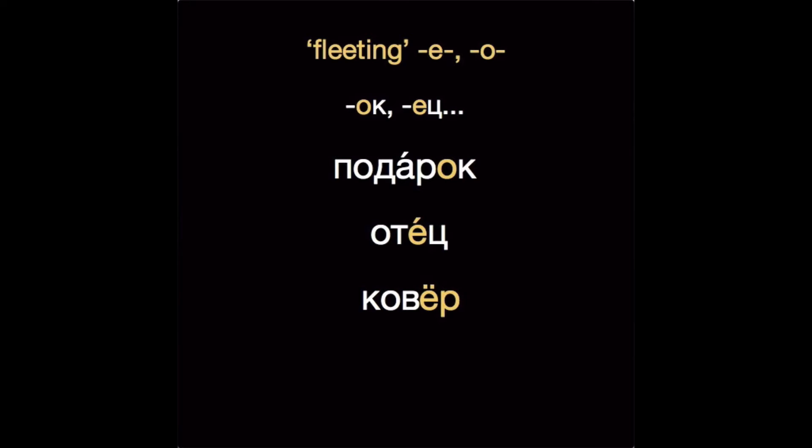Another thing to keep in mind is that the О and the Е in suffixes like -ец and -ок is fleeting — that is, it disappears whenever you add an ending. So from подарок, remove the О, then add the ending to get подарка. Отец — same thing: remove the Е, then add the ending to get отца. You can also see this when the Е, О, or sometimes Ё is the second-to-last letter: кавьор → кавра.